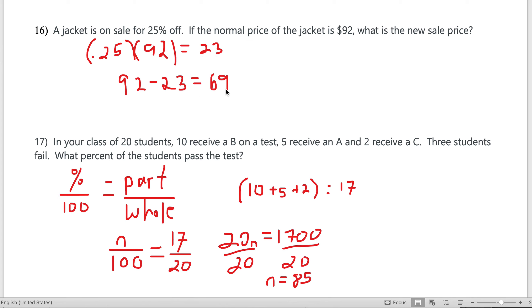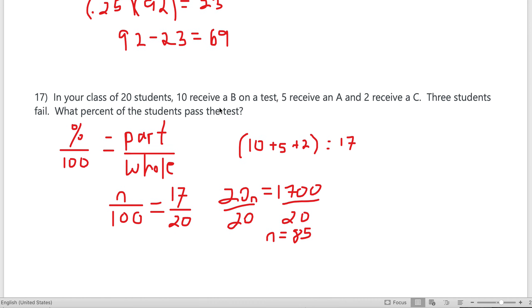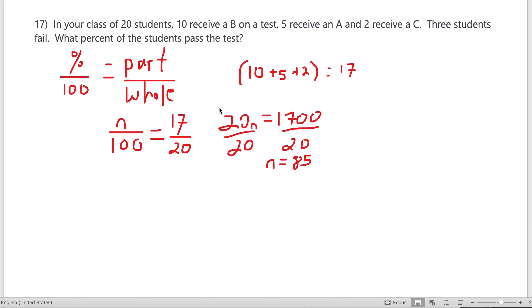Number 16: A jacket's on sale for 25% off. The normal price is $92. What's the new sales price? It's 25% of 92, so 0.25 times 92 is 23. If something is on sale, its price is decreased, so $92 minus $23 is $69.